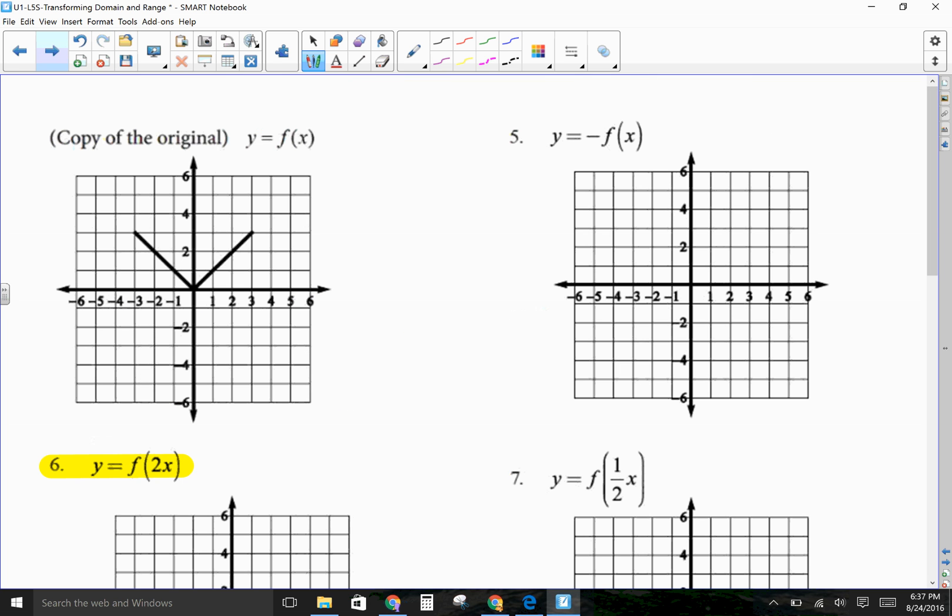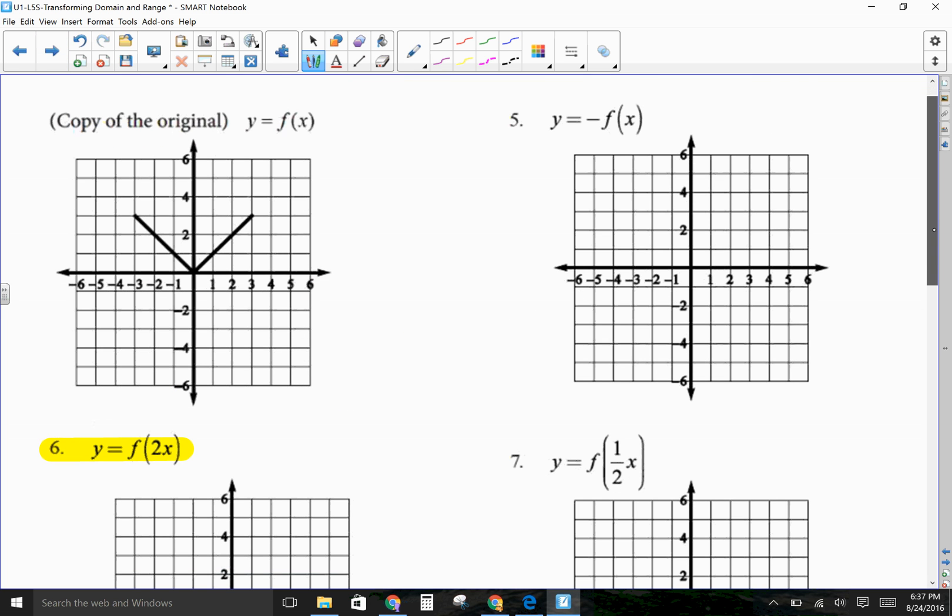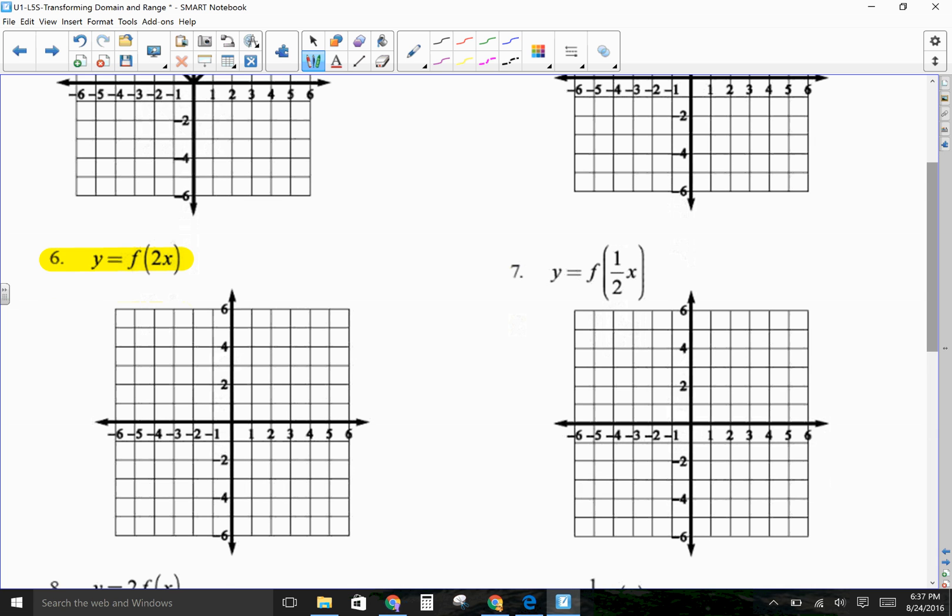One more of that type of graph. Because we didn't do very much of this yesterday. But, again, anytime you have a number that's in there with your f of x, you decide whether or not that number is inside or outside. I hope you can see that's inside the parentheses. Inside affects the x. And we're going to do the opposite. And so, instead of, that's multiplying. So, instead of multiplying by 2, I'm going to divide each x value by 2.